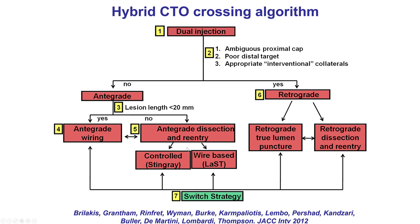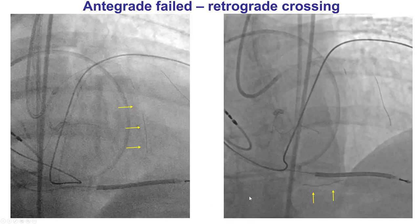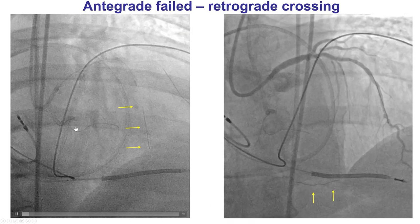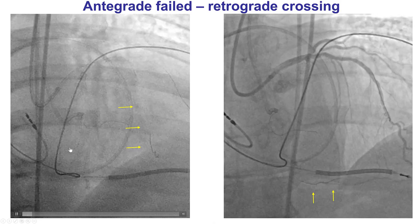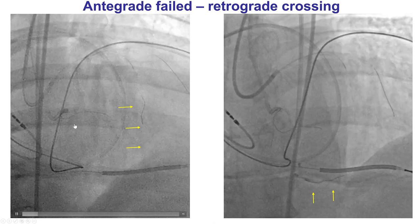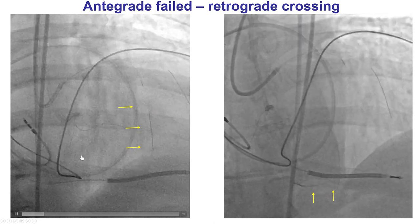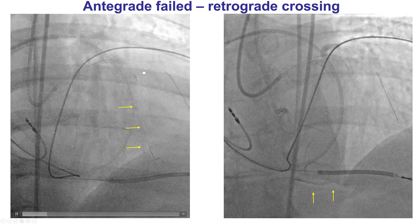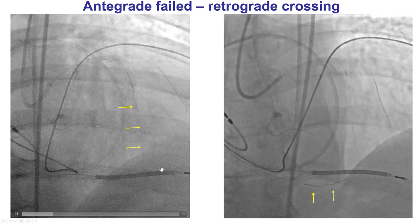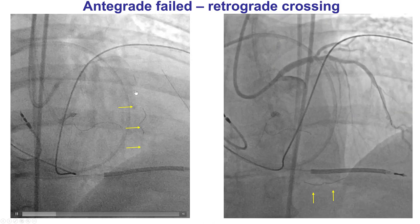We tried antegrade escalation for some time; however, this did not work. The wire made it to the mid-right coronary artery but could not go any further. As a result, we decided to change strategy, and septal collaterals were used for retrograde crossing.